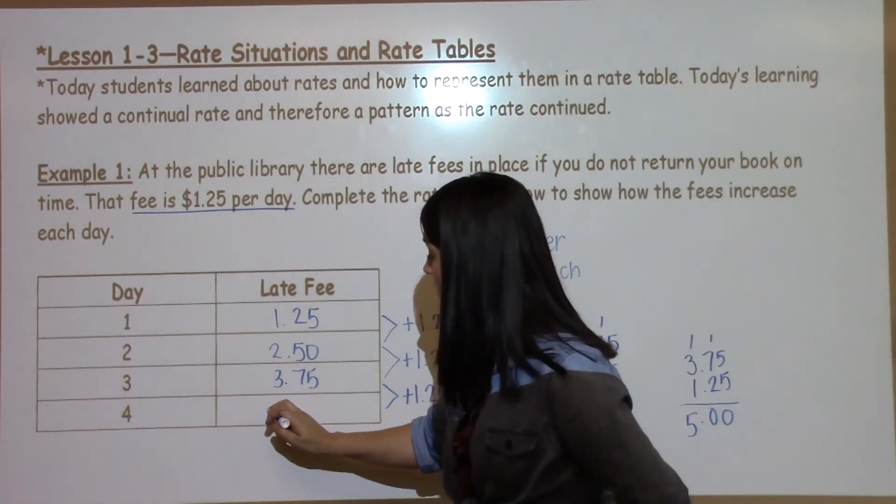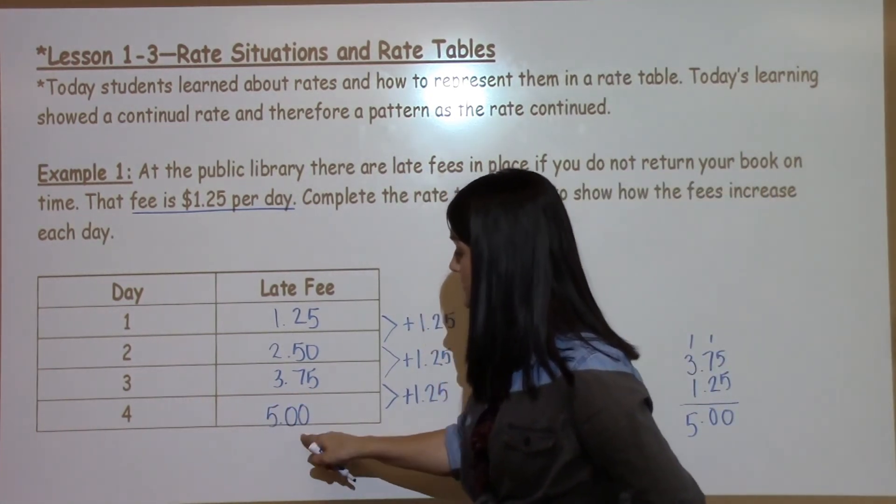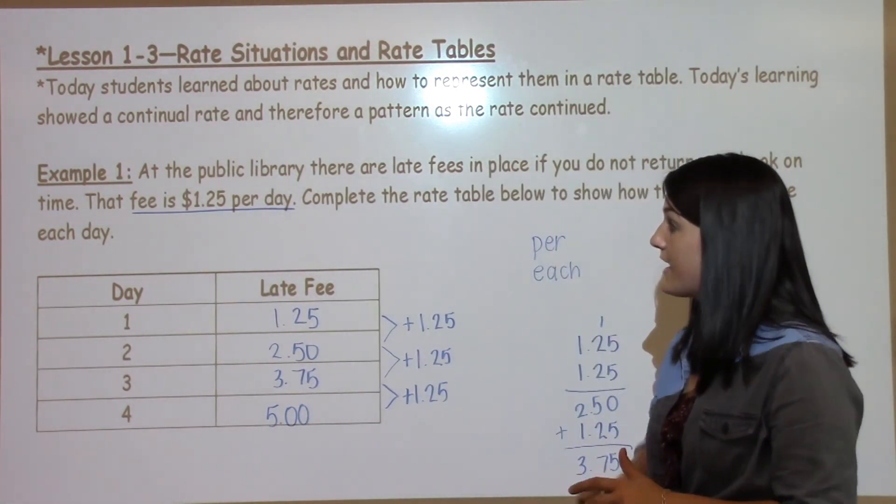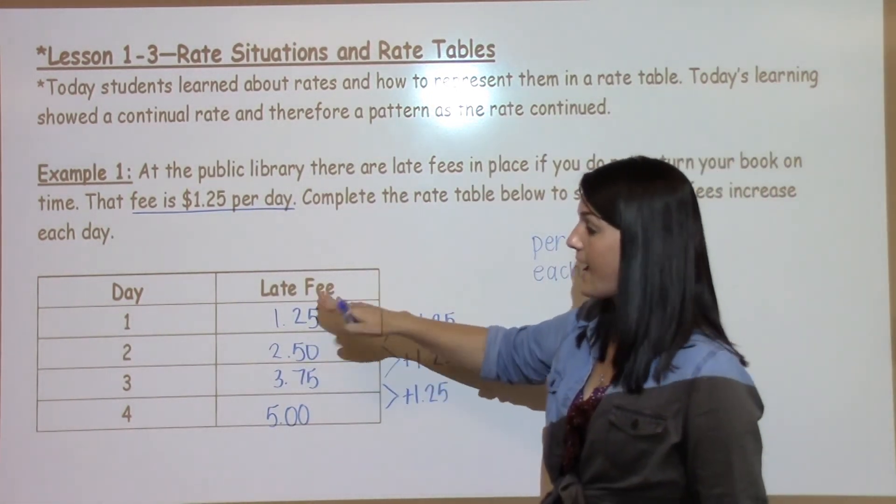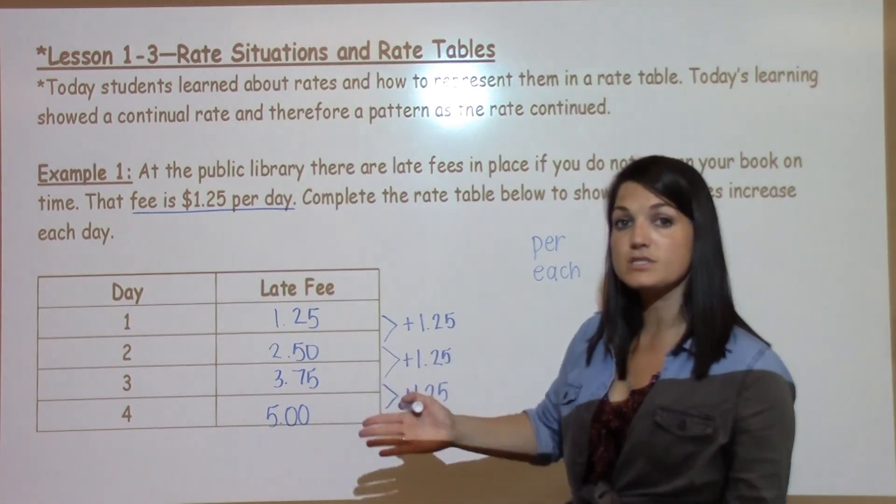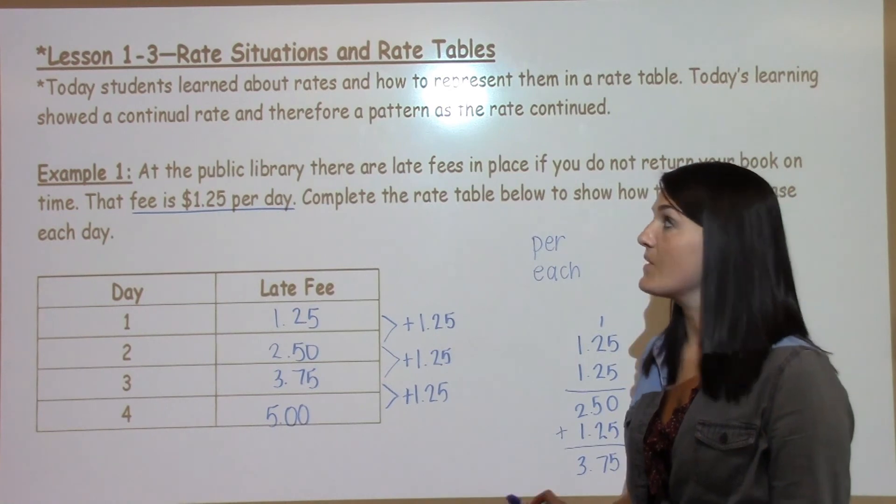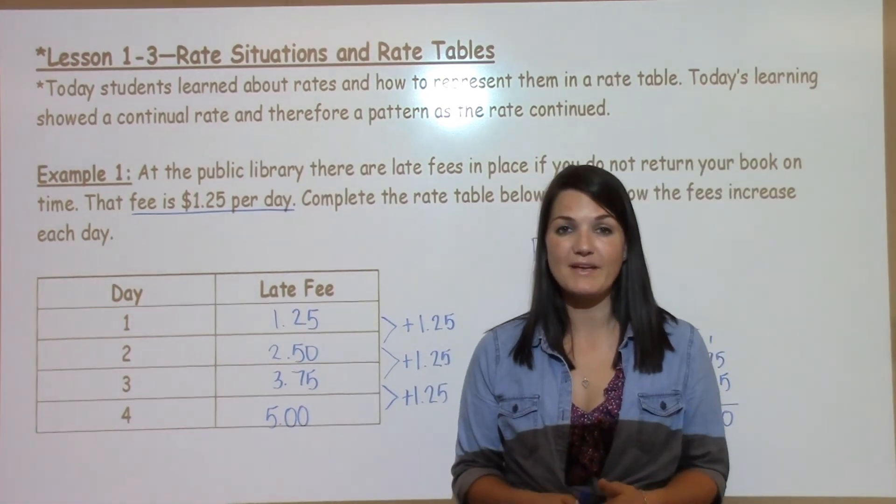And after four days of overdue books I would owe the library $5 in late fees. So again the unit rate was $1.25 and in a rate table we just get bigger by the unit rate as we continue down the table. If you have any questions on 1.3's homework make sure to ask your teacher.